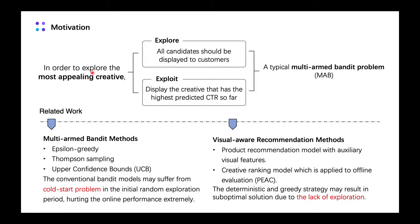In order to explore the most appealing creative, there are two important actions. One is exploring — all candidate creatives should be displayed to customers to get the corresponding feedback. The other is exploitation — we prefer to display the creative that has the highest predicted CTR to ensure overall performance. This procedure can be modeled as a typical multi-armed bandit problem, which balances the exploration and exploitation trade-off within limited resources.